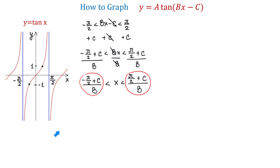Now, let's take another look at the basic tangent function. If we look at this period, we see that the function crosses the x-axis right in the middle between these two vertical asymptotes. This point is an x-intercept for this function. Then, if from the x-intercept we move halfway to the right between the x-intercept and the vertical asymptote, the value of the function is positive 1, and if from the x-intercept we move halfway to the left, the value of the function is negative 1.